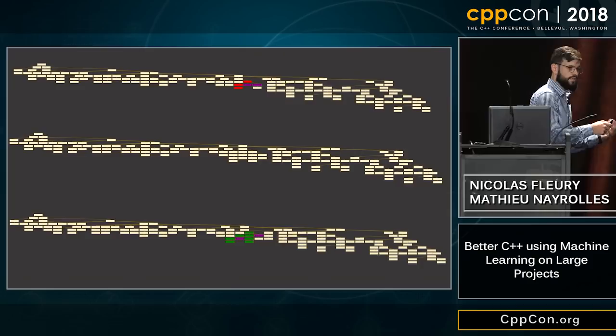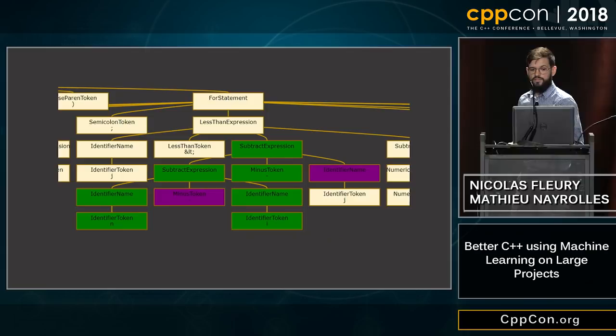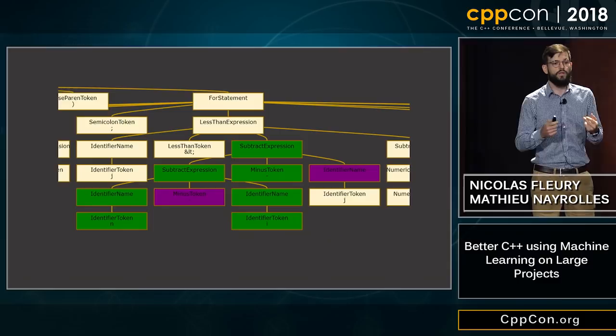If you zoom in within the tree, you can see what we have been doing with your contribution. We've been removing some of your tokens, removing some of your identifier names, and replacing those with the ones we found in the fix of the while-based bubble sort.